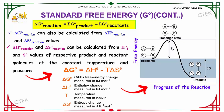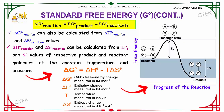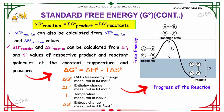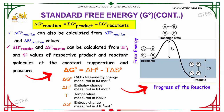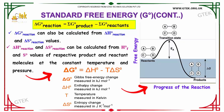Delta H° of the reaction and delta S° of the reaction can be calculated from the standard enthalpy of formation H°f and S° values of the respective product and reactant molecules at constant temperature and pressure.